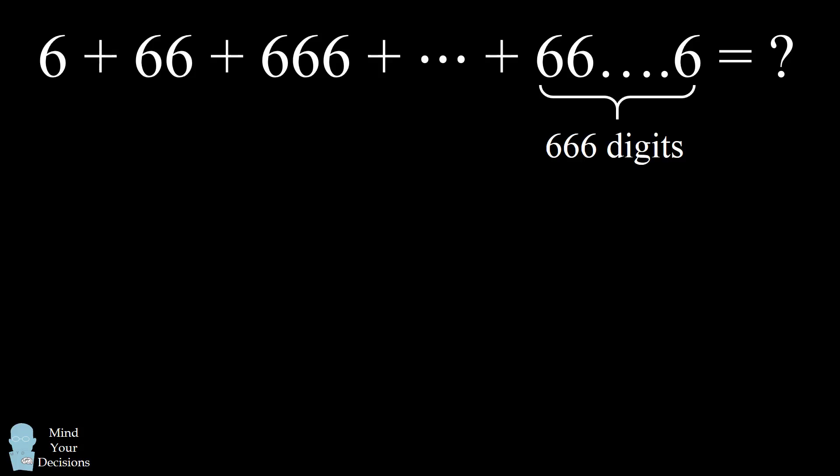So let me first explain the answer to this problem. One way you could write the answer is in the following form. It'll be 6/9 times the following quantity. We first have a fraction where the numerator is 10 to the power of 667 minus 10, and the denominator is 9. We then subtract 666 from that fraction.